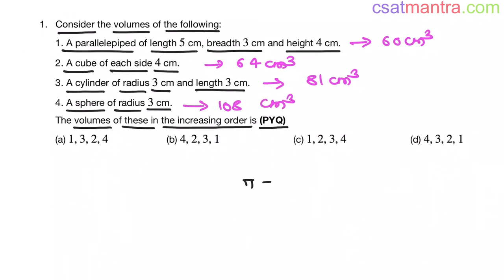See, π is actually 22 by 7, which is approximately 3.14. Here we are asked to find the increasing order. So I am taking this 3.14 as 3. Because there is a sufficient gap between 81 and 108. These two values we have approximated. And there is sufficient gap. More than 20 gap is there. So there won't be any problem in taking π as 3.